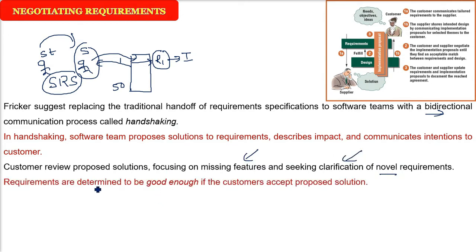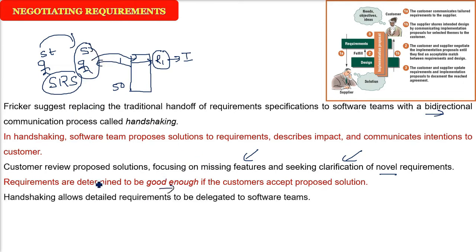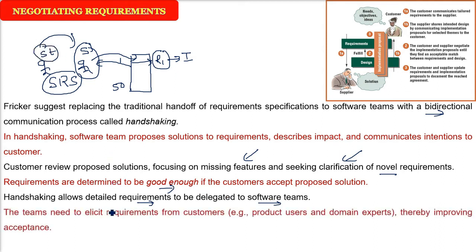How do we know that the requirements are good enough? Whenever you propose a solution to the requirement and the user accepts it, the requirements are now good enough to go. These are the basics of handshaking. Handshaking means giving all the detailed requirements — it's good enough, but we need to get it more detailed. This is given, directed, and delegated to the software team. Now the software team is going to understand it more, elicit it more, elaborate it more.